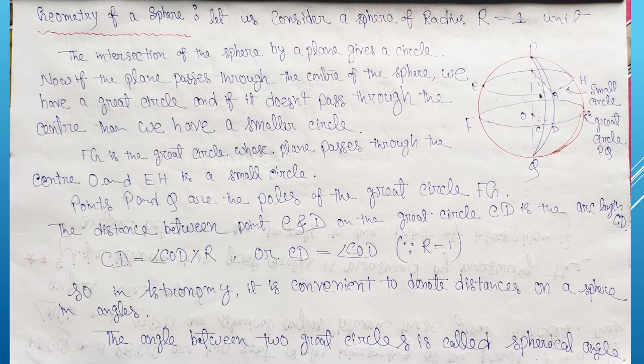Let us consider a sphere of radius r equal to one unit. The intersection of the sphere by a plane gives a circle. Now if the plane passes through the center of the sphere we have a great circle, and if it doesn't pass through the center then we have a smaller circle.